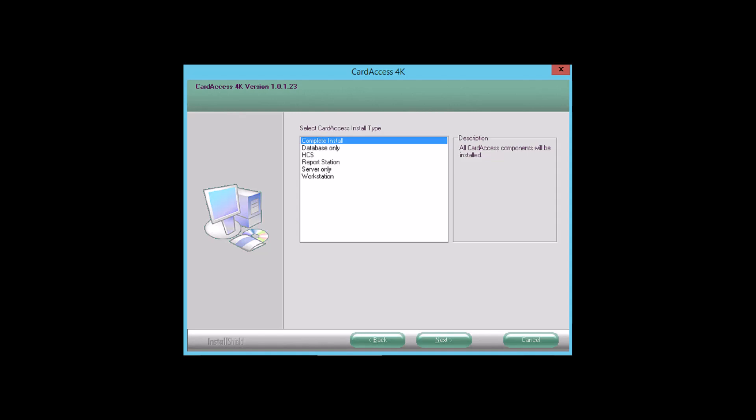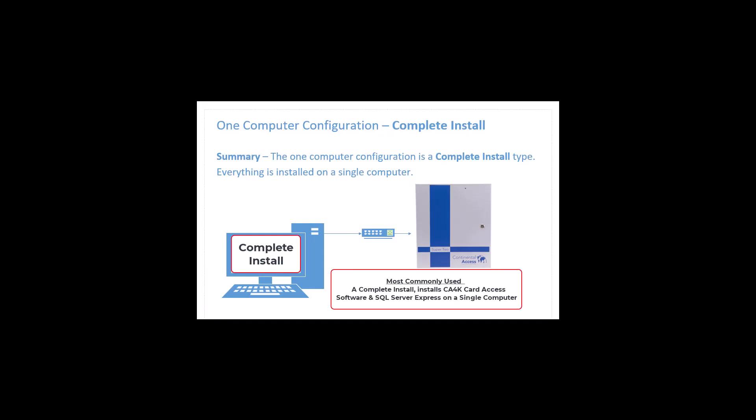The following screens will display a few of the possible configurations. The first configuration we will discuss is a complete install, which is the first selection in the menu. This is also known as a single computer installation. For this type of installation, all applications and services will be installed on one computer.